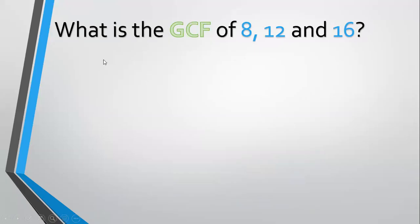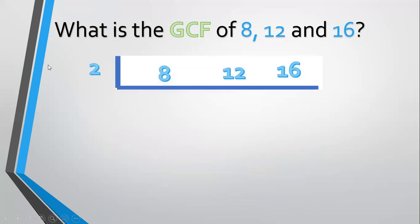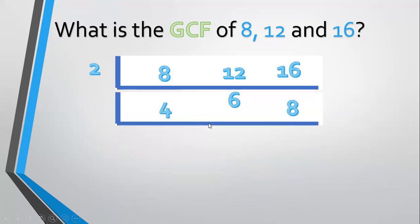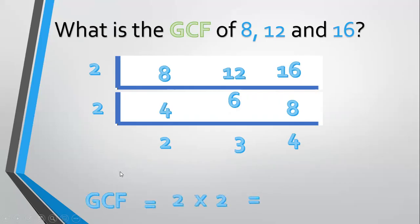Another example, what is the GCF of 8, 12, and 16? Align 8, 12, and 16. Divide by a prime common factor, 2. 8 divided by 2 equals 4. 12 divided by 2 equals 6. 16 divided by 2 equals 8. Divide again by a prime common factor, 2. 4 divided by 2 equals 2. 6 divided by 2 equals 3. 8 divided by 2 equals 4. 2, 3, and 4 have no prime common factor, so stop. Get the GCF: multiply 2 times 2 equals 4. The GCF equals 4.